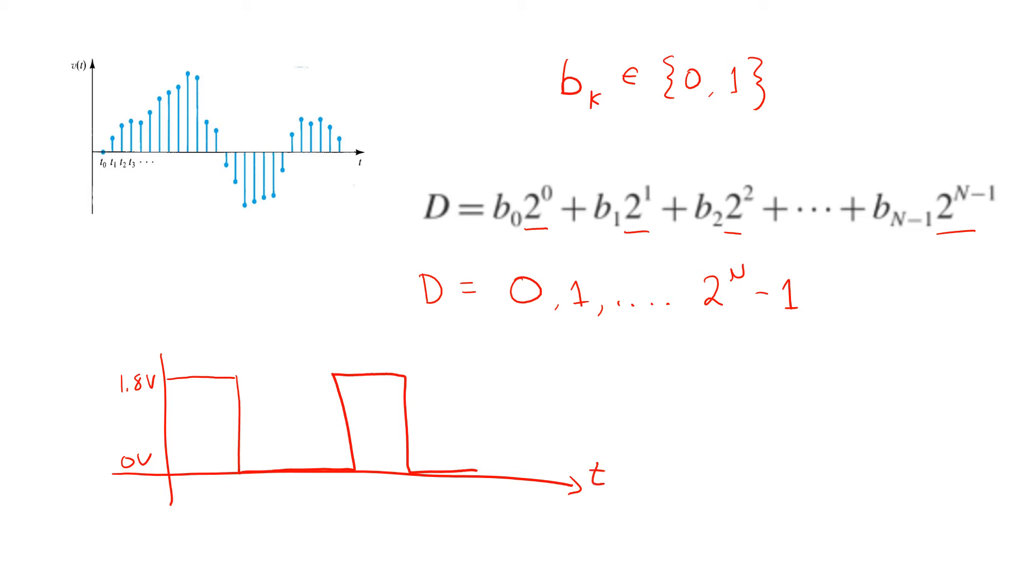So those values can change at discrete points in time corresponding to discrete times at which the original underlying signal was sampled. So to represent D, we need n node voltages.